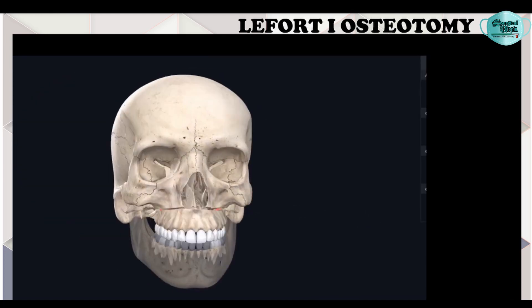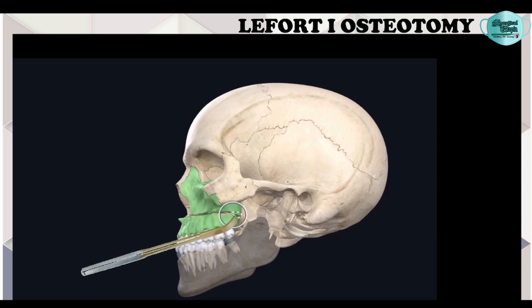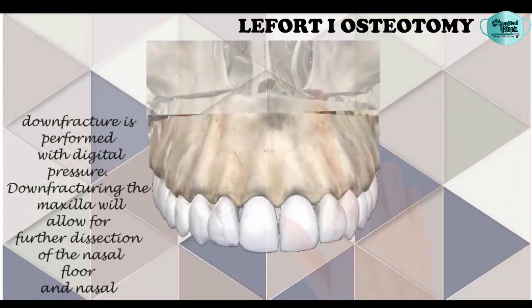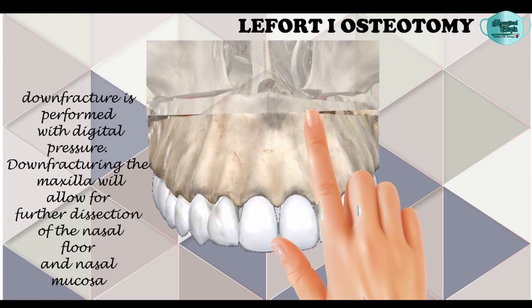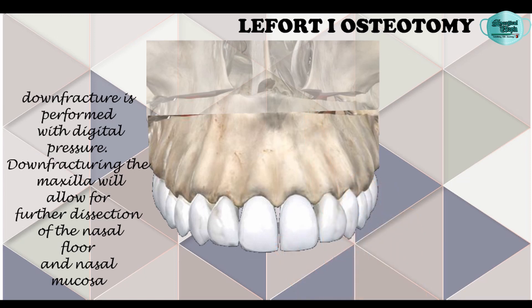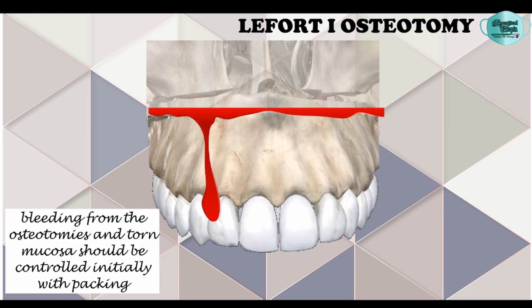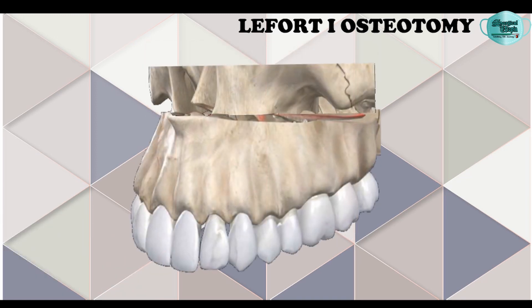A U-shaped osteotome is used to separate the nasal septum from the maxilla, and the posterior maxillary wall is fractured with this osteotome. A curved osteotome is used for separation at the pterygomaxillary junction. Once the osteotomy cuts are complete, a downward fracture of the maxilla is performed with digital pressure to allow dissection of the nasal floor and nasal mucosa. During the down-fracture, bleeding may occur from the osteotomy sites and torn mucosa, which should be controlled with initial packing.